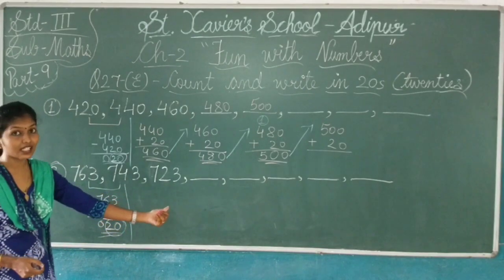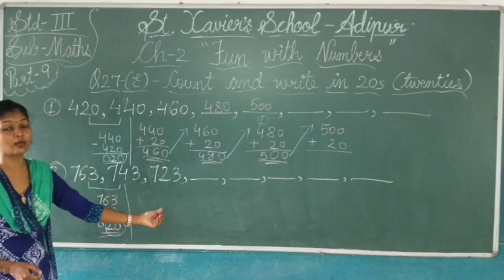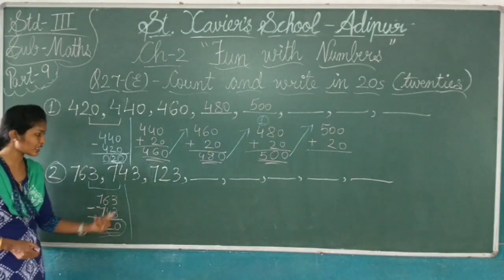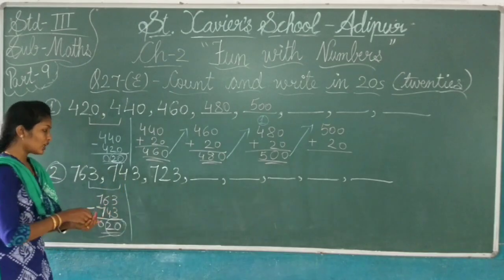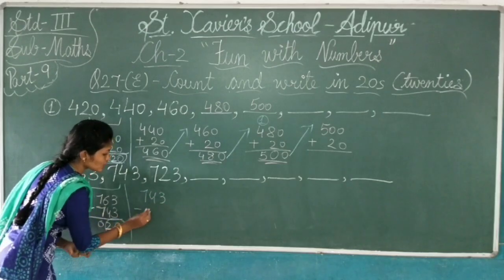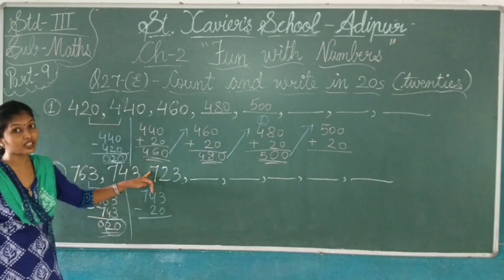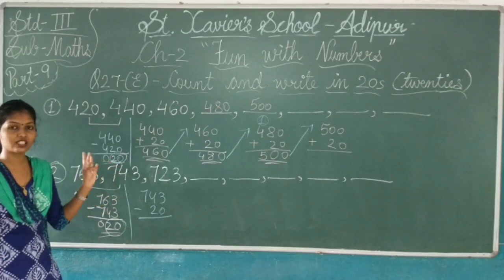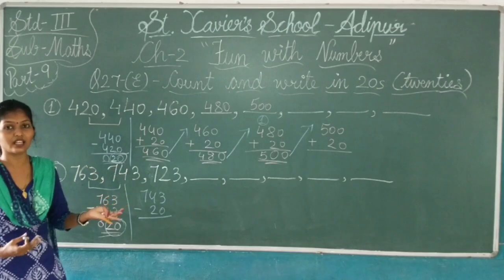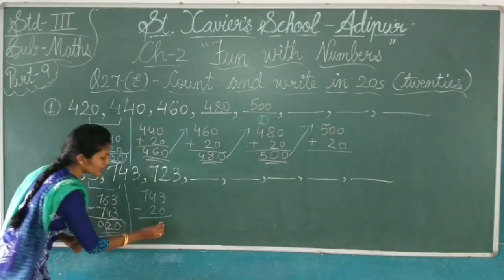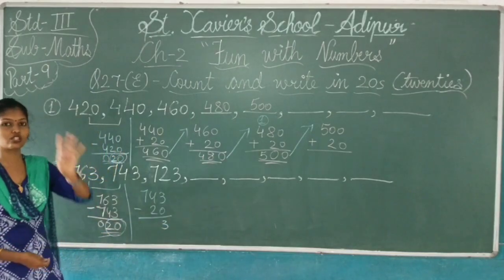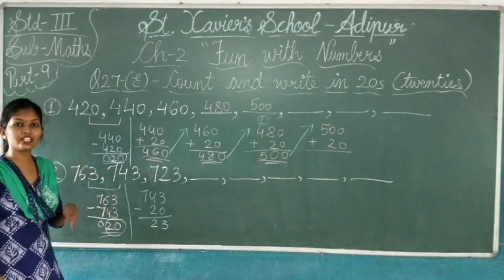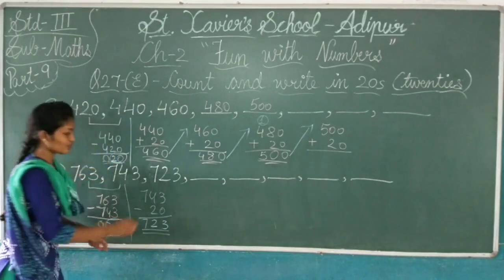20. Now we have the difference as 20. Now what you have to do? This is decreasing, so we are saying you should subtract. We are going to get 743 minus 20. Now 3 minus 0 will be 3, 4 minus 2 is number 2, and 7 as it is 7. And this is 723.